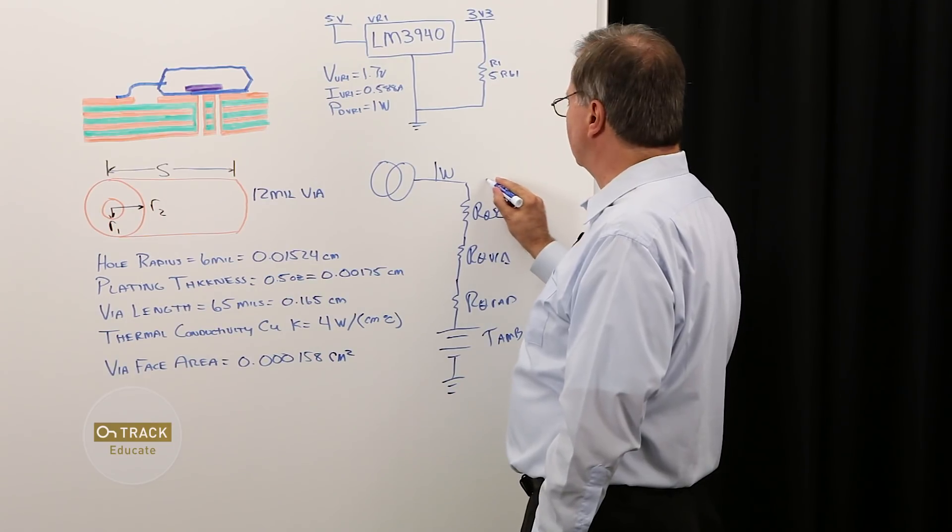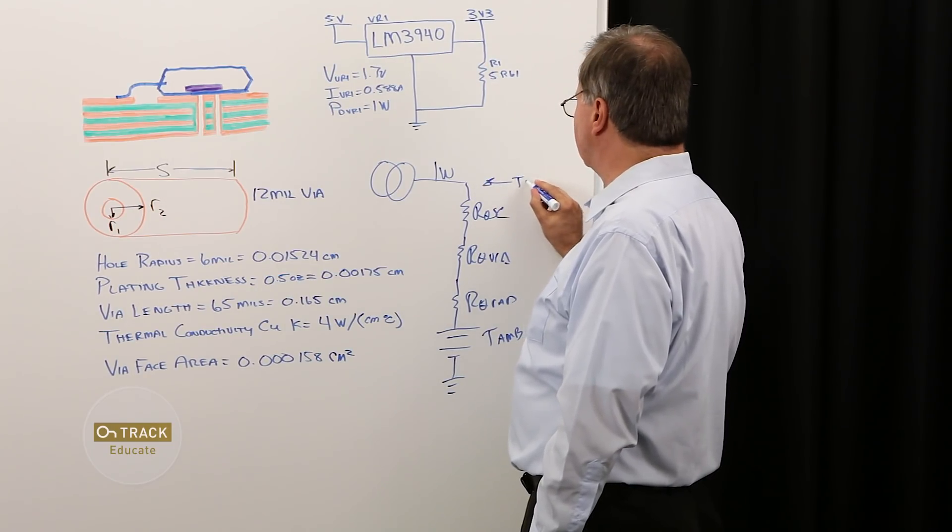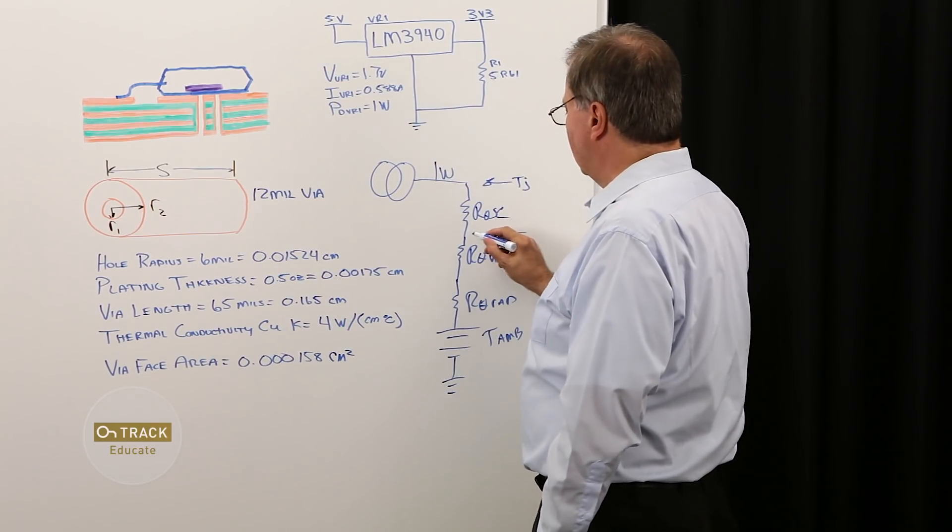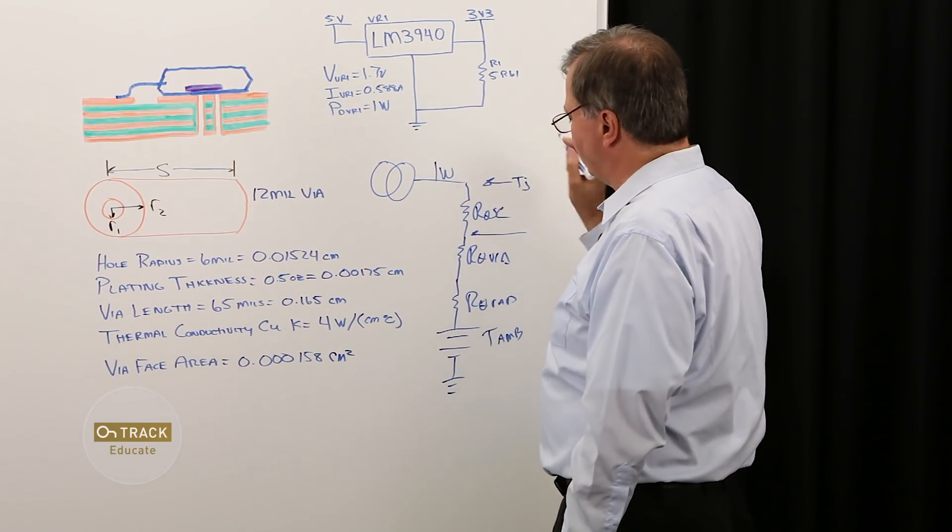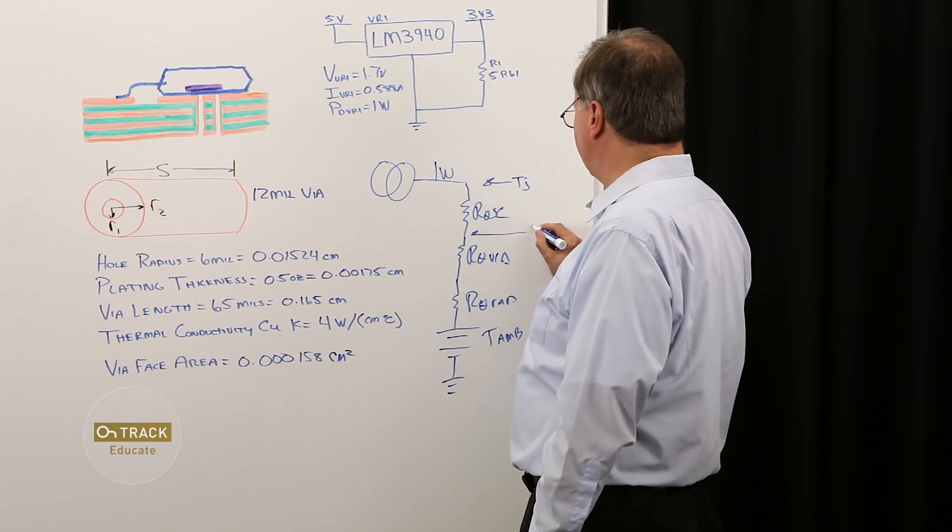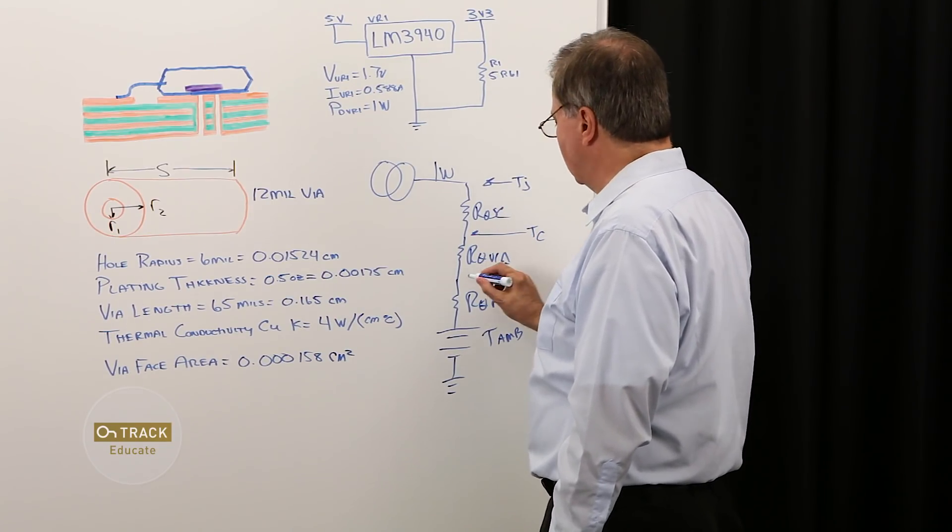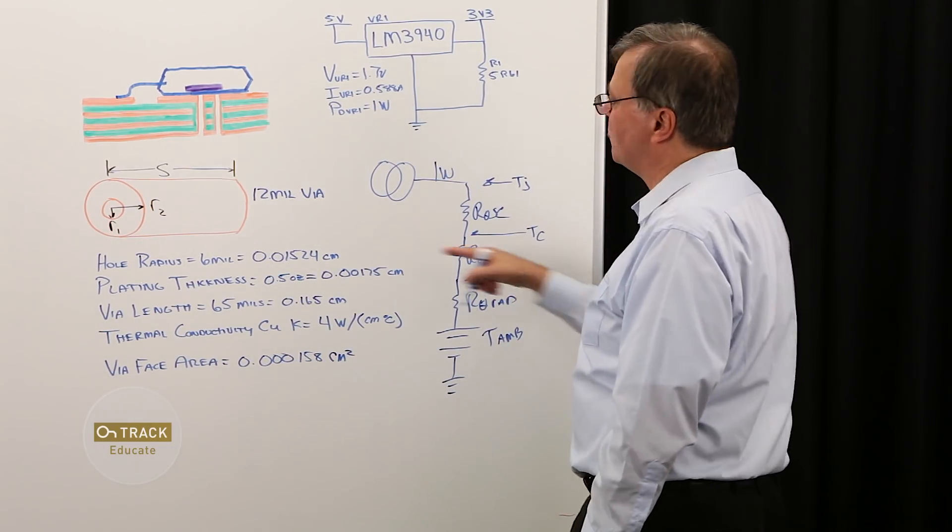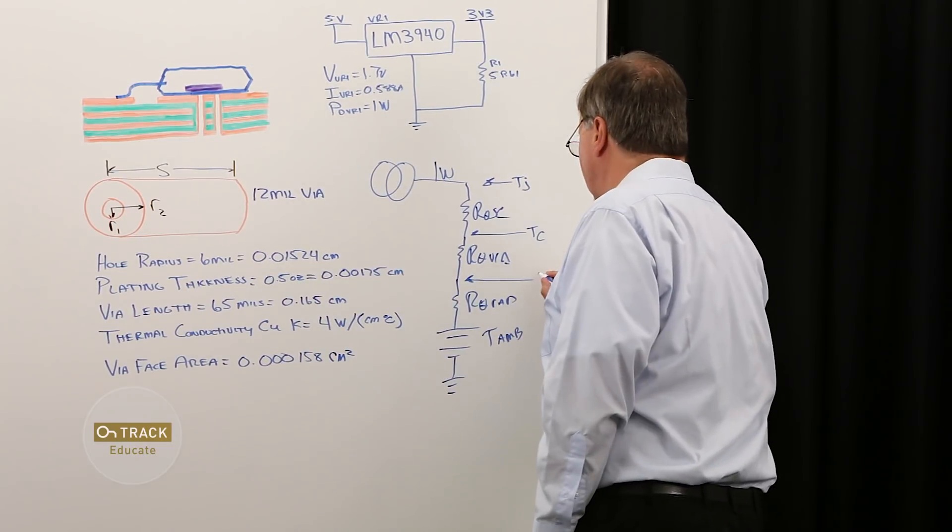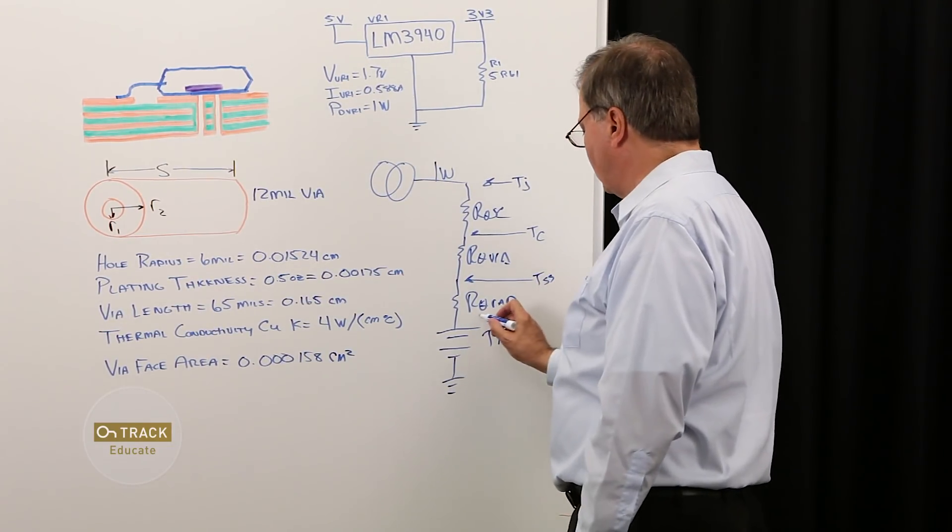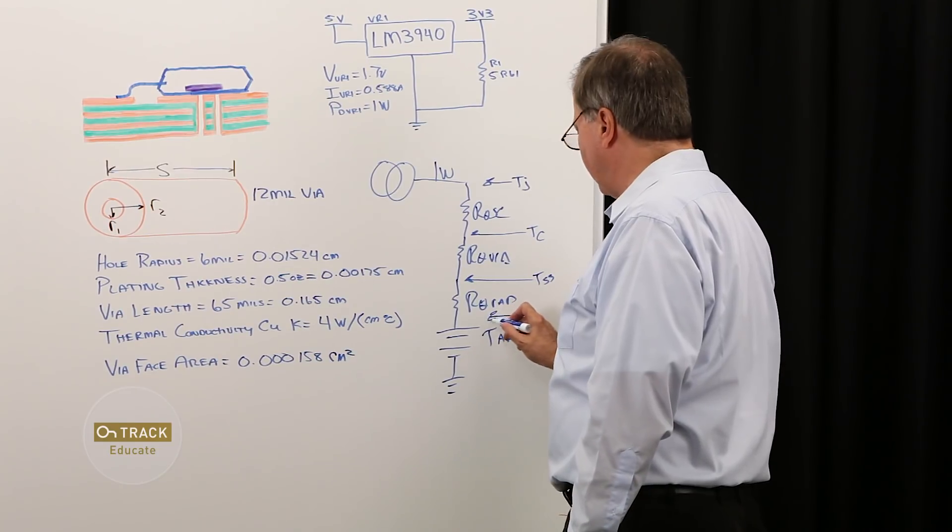The first temperature that we realize is the junction temperature of our semiconductor device. Then, once we flow through the thermal resistance junction to case, we have the temperature of our case. Then we have the thermal resistance of our vias, and that brings us down to the temperature of the secondary side of the board, and then we have here our ambient.